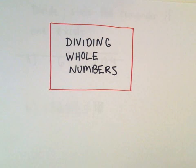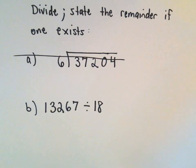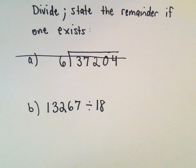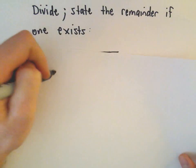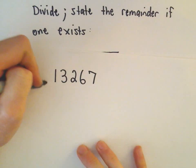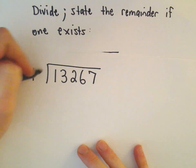Alright, so one more example here dividing whole numbers. So here we'll have 13,267 divided by 18. So let me rewrite that. 13,267 divided by 18.